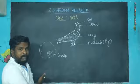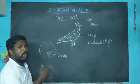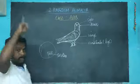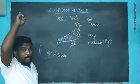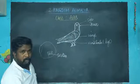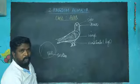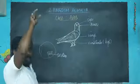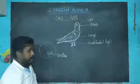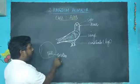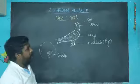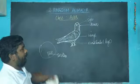Recently it is discovered that the pecten gives sharp vision for the birds. So the sharp vision is given by the pecten in the birds. Then the body is fully made up of feathers.